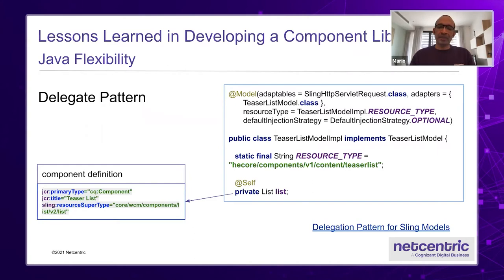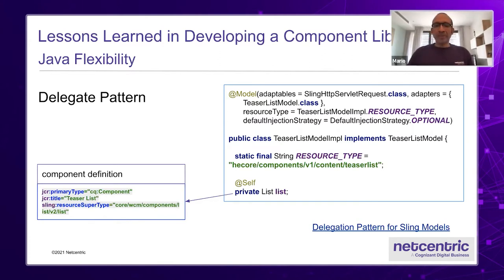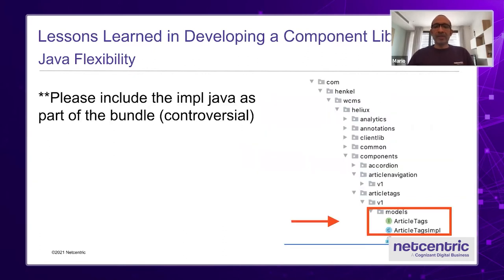You may wonder, what is that delegate pattern? If you haven't seen it working with Sling, there is a link here to the right — but basically, as you see in the lower left, the component definition declares a resource supertype using, in this case as an example, the list from the core components. And then to the right, you can see the Teaser model implementation having the self annotation, so it automatically injects the list. This is very powerful because you're already getting all the power of the list in your components out of the box. It's a pattern that you should use.